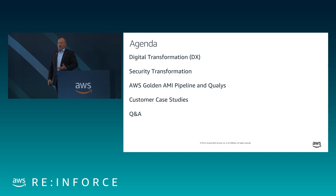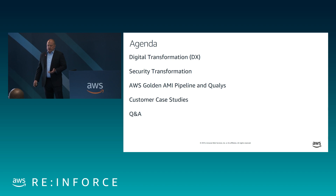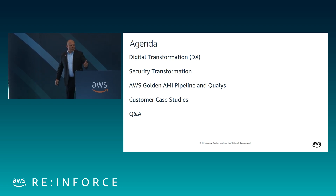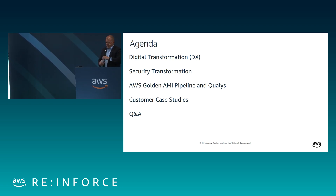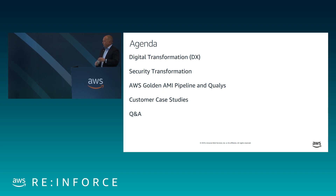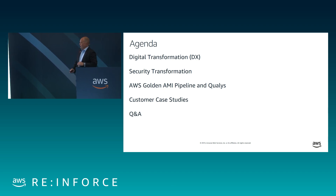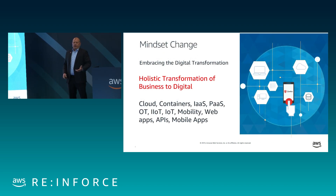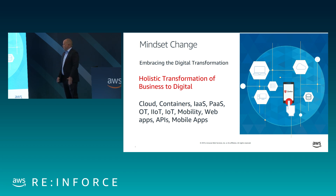Basically, we're highlighting the golden AMI pipeline, which we worked with the AWS solution architects on, and how to apply that in your environment. We'll be talking mainly about utilizing the APIs to integrate with your DevOps teams to really enhance and help bring security to the forefront, and talking through the security transformation that comes with that. We'll talk through a couple of customer use cases, and hopefully you take away how to bring security and DevOps to the table and accomplish your security goals.